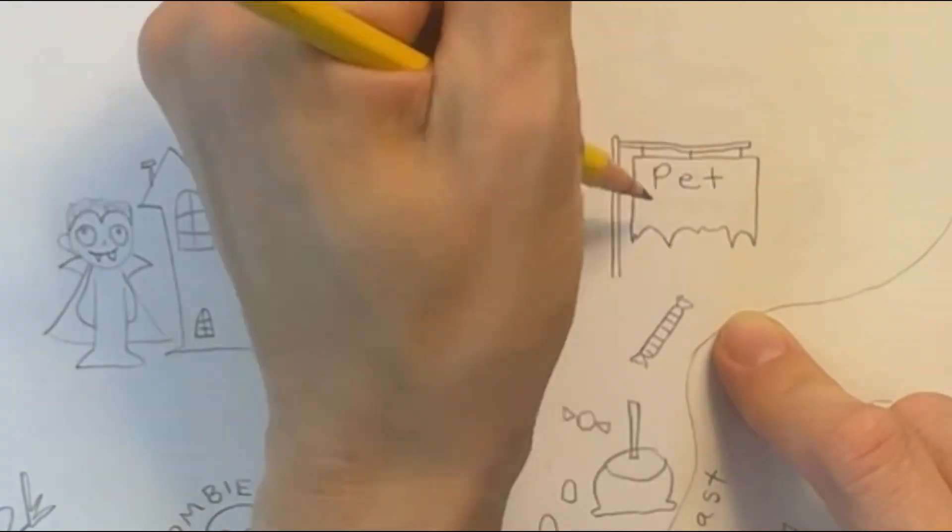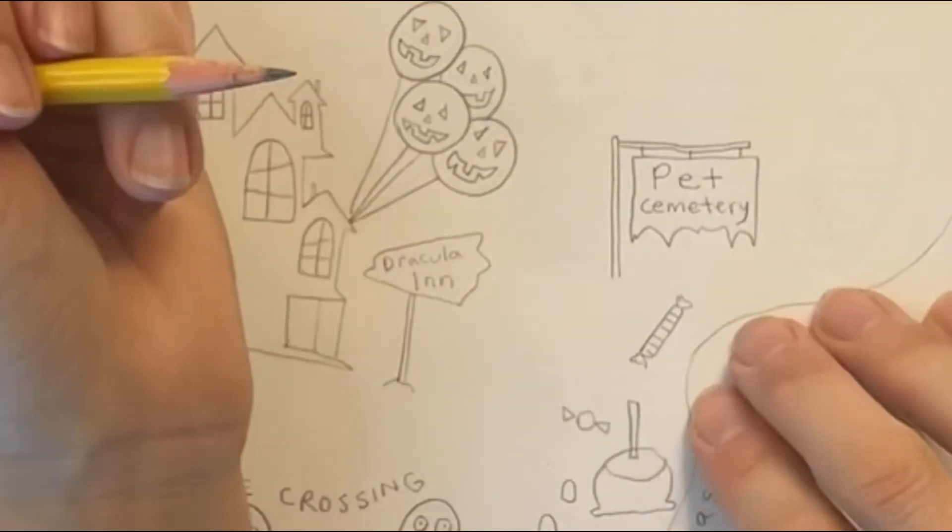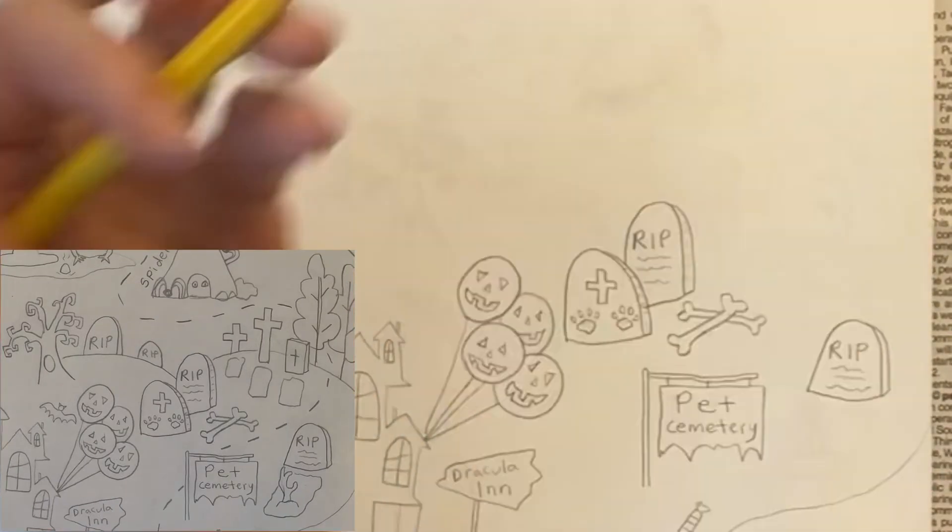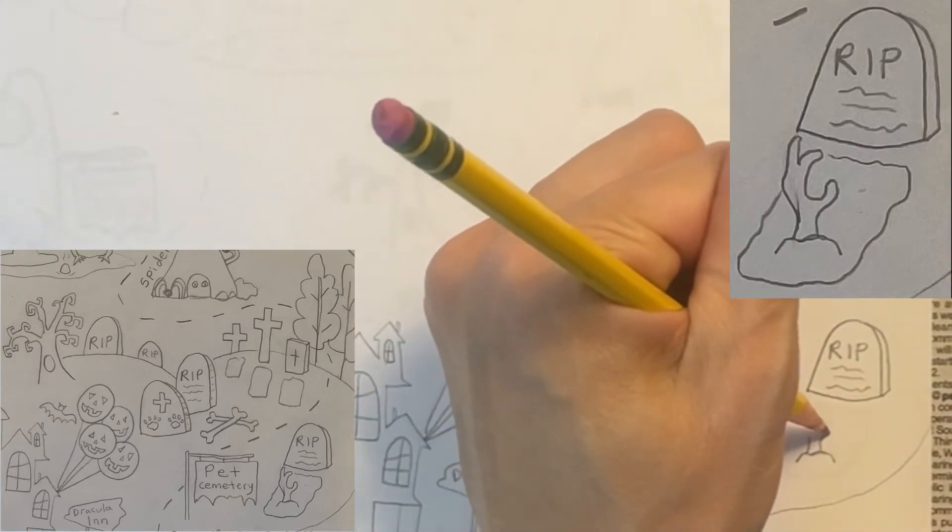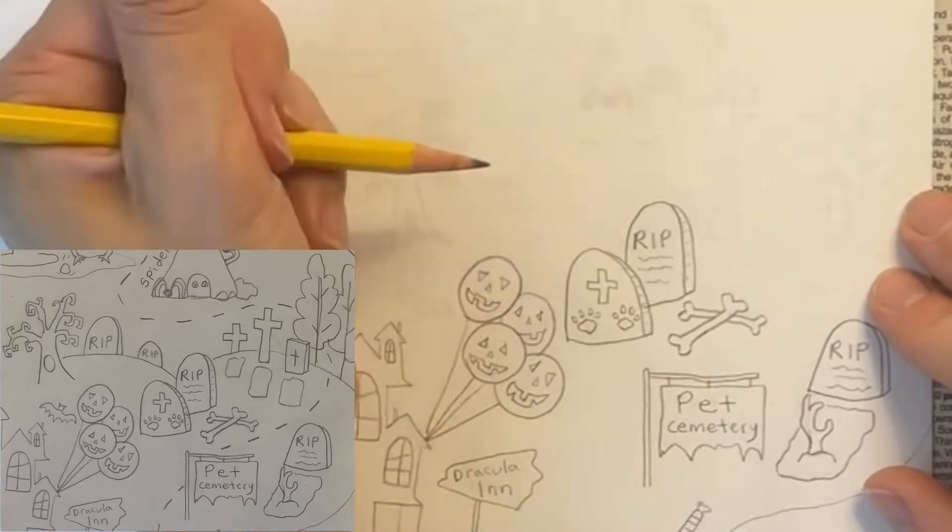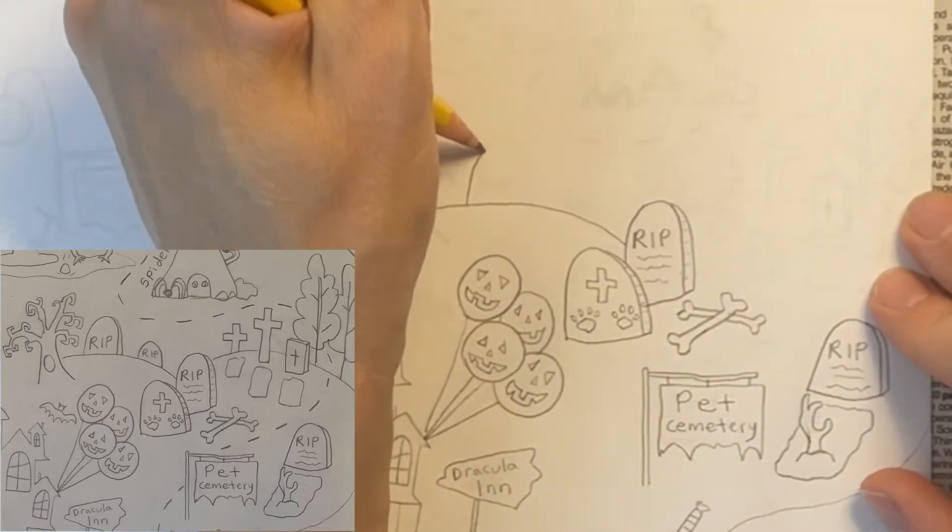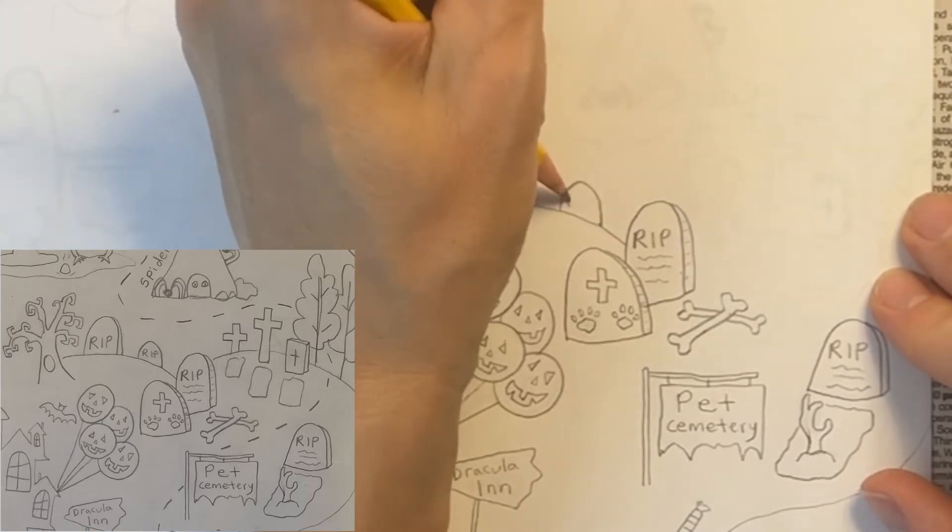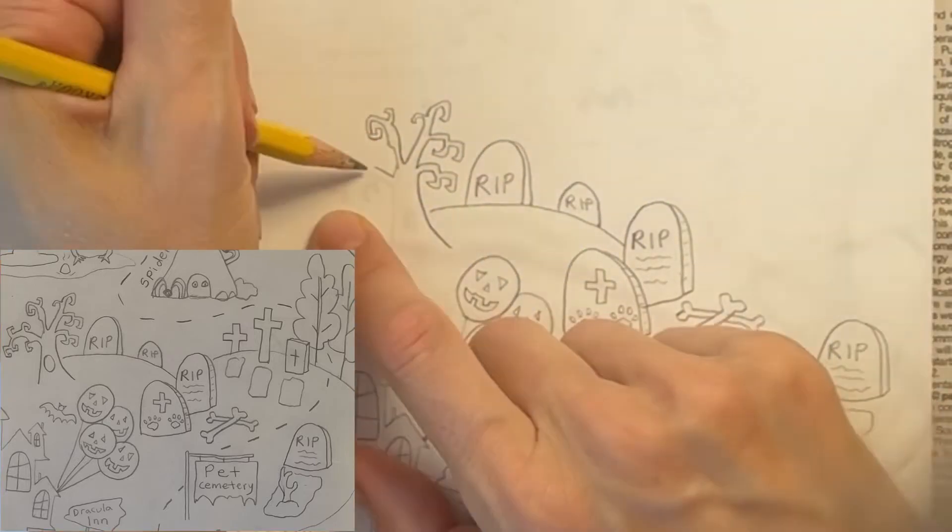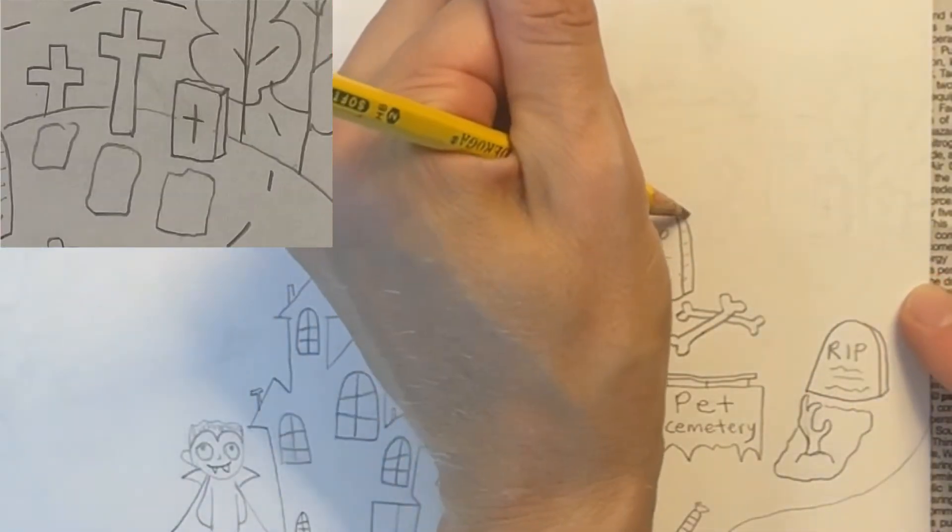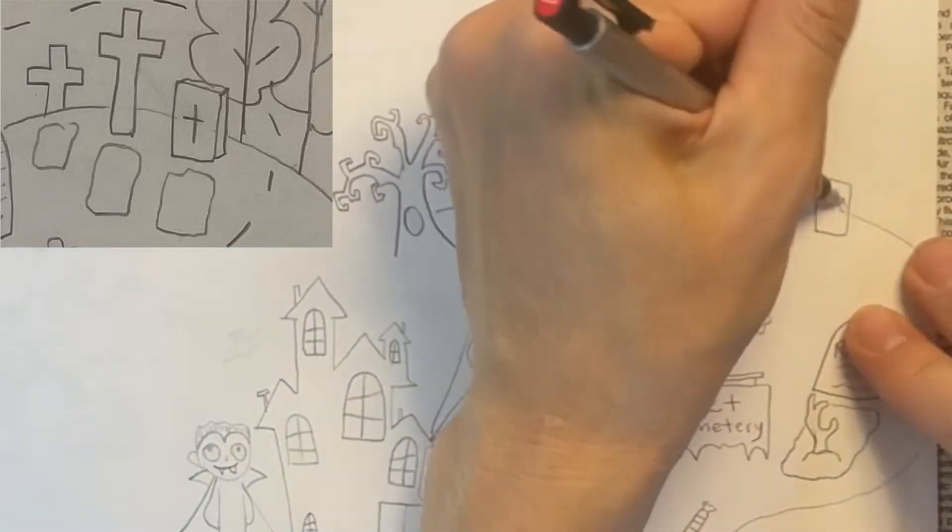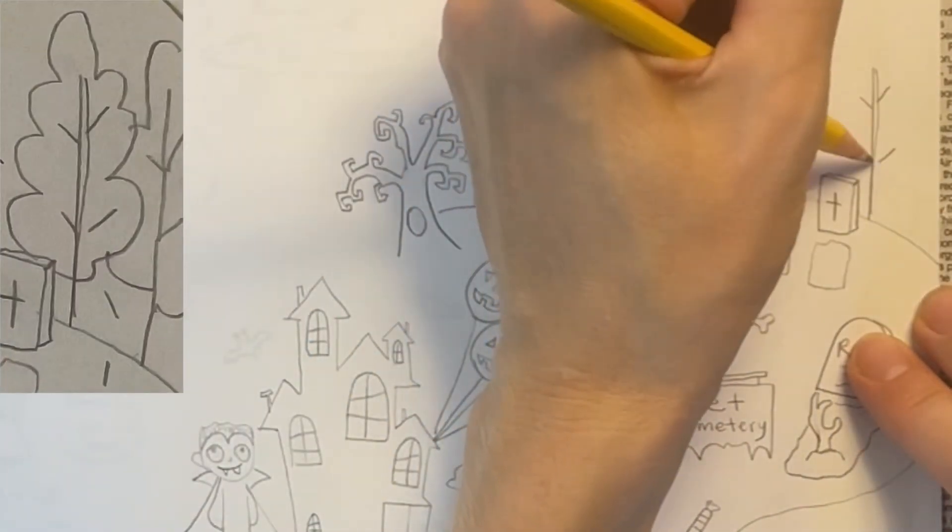Just north of the Candy Coast, I'm drawing a sign that says Pet Cemetery. Right above this, I'm drawing some tombstones right here. There's going to be some kind of creepy hand reaching up out of the ground. Now I'm drawing a hill with a couple more tombstones on it and a creepy old tree with curling branches.